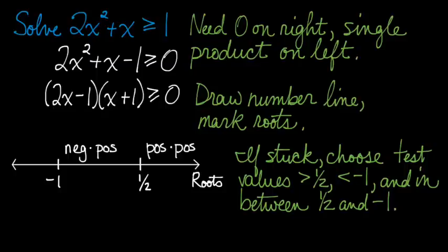In between, say for 0 or 1 quarter, I know that the left-hand linear factor, 2x minus 1, is going to be a negative number every time, and the right-hand factor is going to be positive, so I get negative times positive.